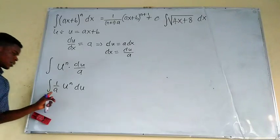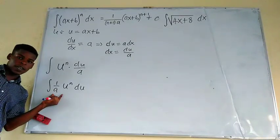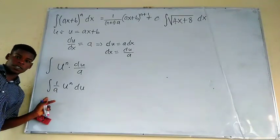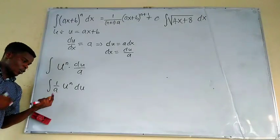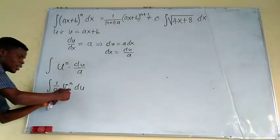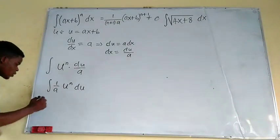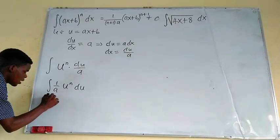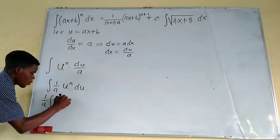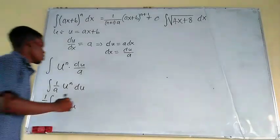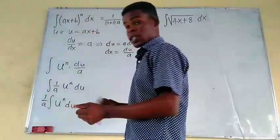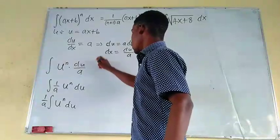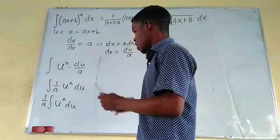Now here, since A is just here, we can write this as integral of 1 over A, because A is in the denominator. But we can actually shift it, like I'm doing here. And because this is a constant, 1 over A, we can take it to the front of the integration sign. So we have 1 over A, and we have the integral of U to power N, DU. Very nice.